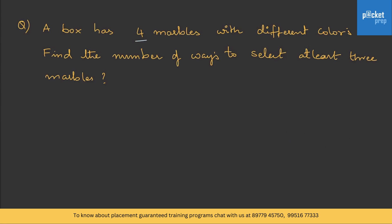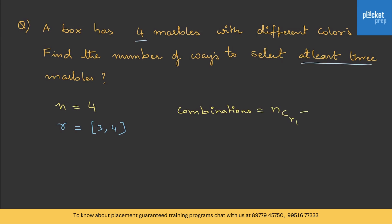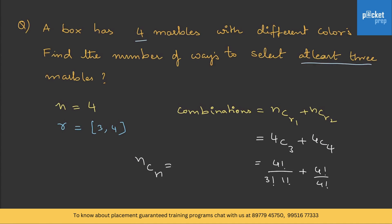To understand this, let us take one question: a box has 4 marbles with different colors. Find the number of ways to select at least 3 marbles. Here n = 4, and 'at least 3' means either 3 or 4. So the total selections = 4C3 + 4C4 = [4! / (3! × 1!)] + [4! / 4!] = 4 + 1 = 5. Remember: whenever you see nCn, it is always 1. So the answer is 5.